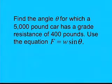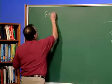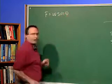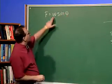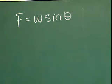Find the angle theta for which a 5,000 pound car has a grade resistance of 400 pounds. Use the equation that F equals W times sine theta. Alright, so in the equation F equals W sine theta, what we know is W is the weight and F is the resistance.